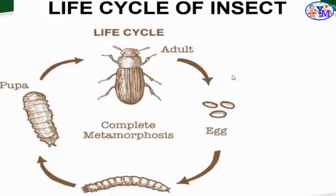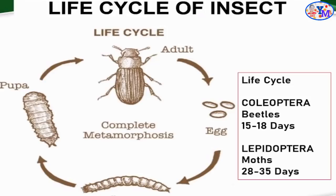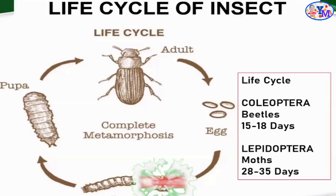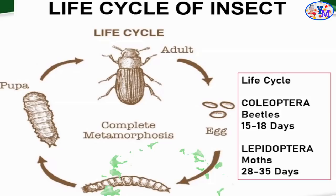Next, let's look at the life cycle of insect pests, which are one of the major pests in storage facilities. There are two insect orders in storage facilities: first is Coleoptera, which are beetles — they can complete their life cycle within 15 to 18 days. We also have Lepidoptera — moths and butterflies — but in storage facilities it is mostly moths, which can complete their life cycle within 28 to 35 days.